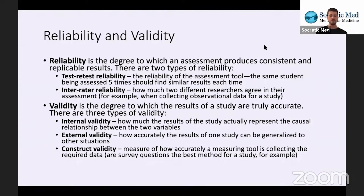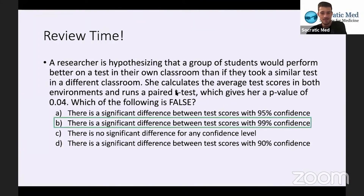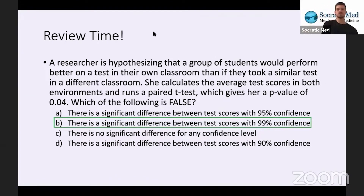You don't have to memorize these, but definitely be familiar with them. Now, review time. A researcher is hypothesizing that a group of students would perform better on a test in their own classroom than in a different classroom. She calculates the average test scores in both environments and runs a paired t-test, which gives her a P value of 0.04. Which of the following is false?